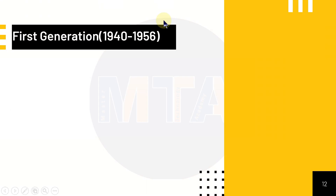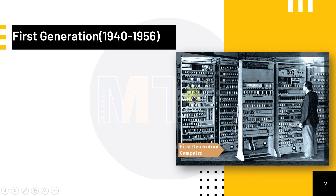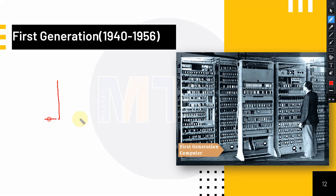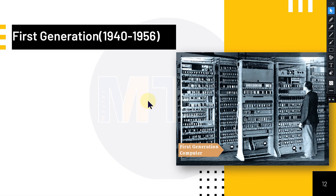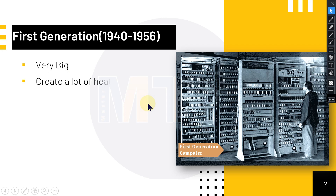The first generation of computers belongs to 1940 up to 1956. This was the first generation, and it belongs to IBM — International Business Machine — the first company that produced the first computer. This computer was very big.